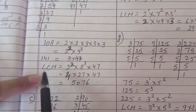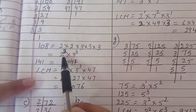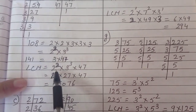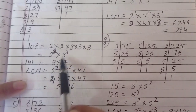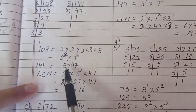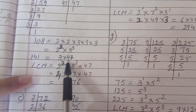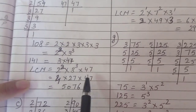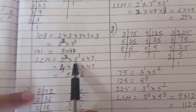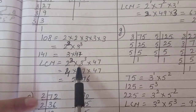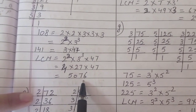Now children, how to find LCM? What is the power of 2 here? 2. And the power of 2 in 141? No power is there. But we have to take all the numbers, so take 2 power 2. Here 3 power is 3, and there 3 power is 1. You have to take the greatest one — 3 power 3 is greater. And 47 is here but not there, but we have to cover all the numbers. So 2 power 2 means 4, 3 power 3 means multiply 3 three times: 3 threes are 9, 9 threes are 27. Into 47. After multiplication, whatever you get will be the LCM.